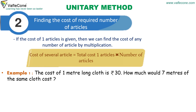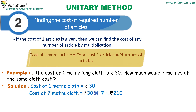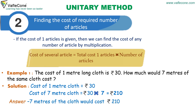Solution: cost of one meter of cloth is rupees 30. Cost of seven meters of cloth is rupees 30 multiplied by 7, which is rupees 210. So seven meters of cloth would cost rupees 210.